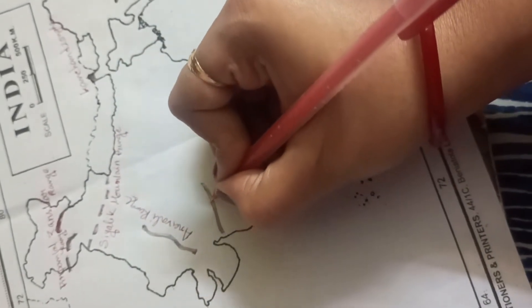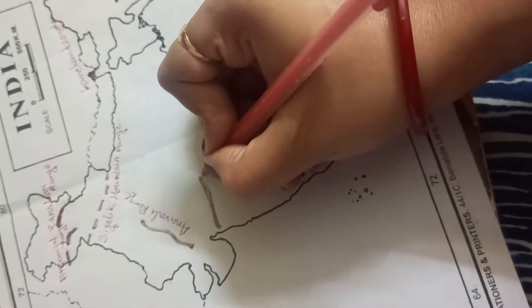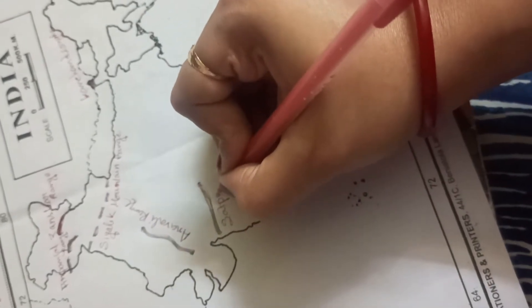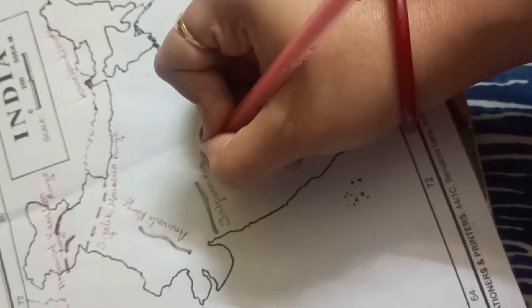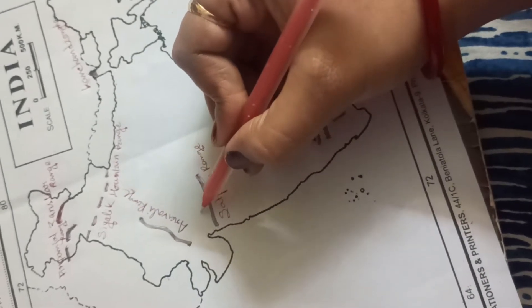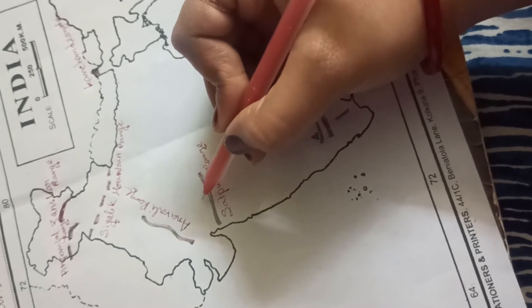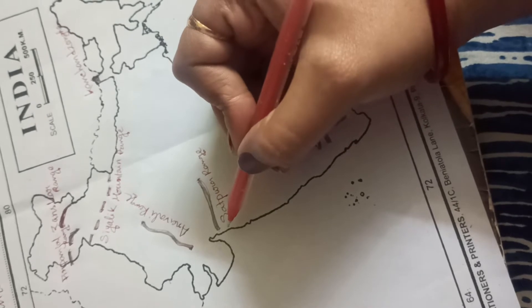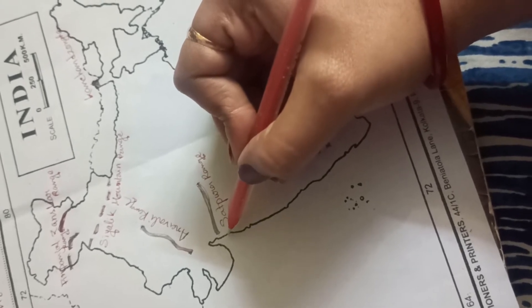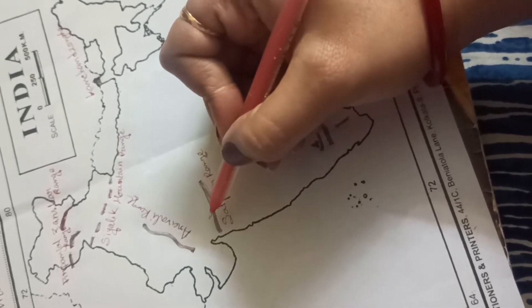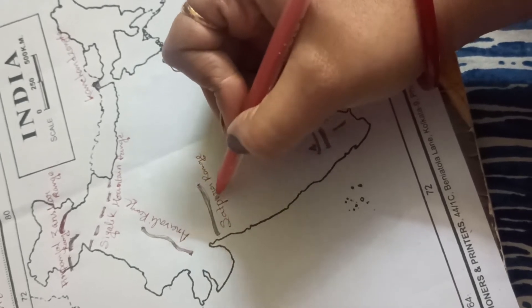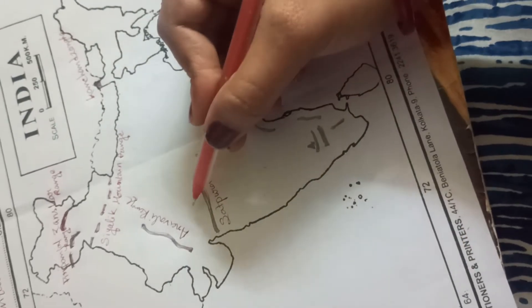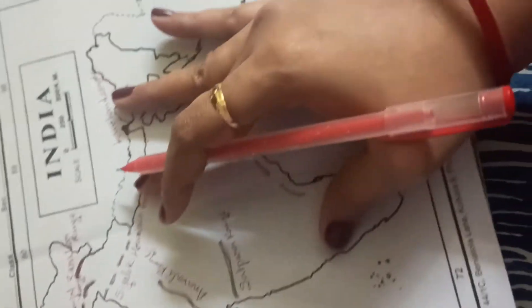And this one is Satpura range. And you know here is one river, that is Narmada. And another river is here. You have to remember these two names: between Narmada and Tapti, this Satpura range is located. Here is Narmada and here is Tapti. Between two rivers the Satpura range is located.